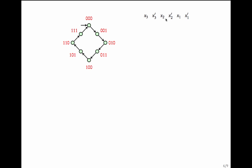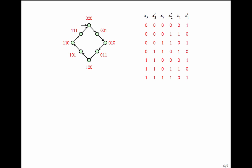We want to look at the transitions in a different order. When x3 x2 x1 is 0 0 0 the target is 0 0 1. When x3 x2 x1 is 0 0 1 the target is 0 1 0. When this is 0 1 0 the target is 0 1 1, and so on. 0 1 1 goes to 1 0 0, 1 0 0 goes to 1 0 1, 1 0 1 goes to 1 1 0, 1 1 0 goes to 1 1 1, and finally 1 1 1 goes to 0 0 0. The rest of the entries will go to 0.